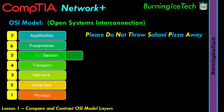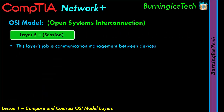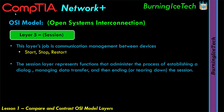Layer five is the session layer. Its job is communication management between devices — it starts, stops, and restarts communication sessions between devices. Most application protocols require the exchange of multiple messages between client and server, and this exchange is called a session or dialogue. The session layer establishes, manages, and tears down sessions, allowing users on different machines to establish active communication sessions. It is responsible for establishing, maintaining, synchronizing, and terminating sessions between user applications.